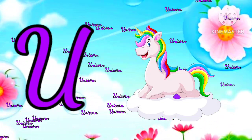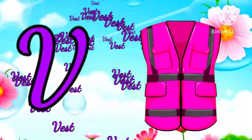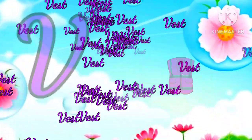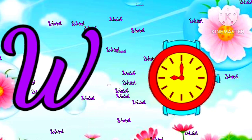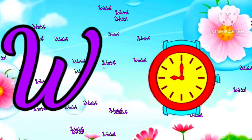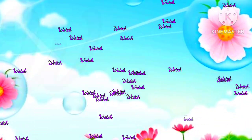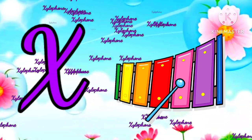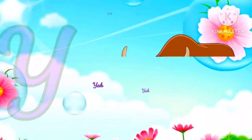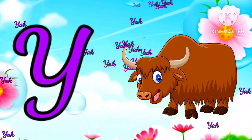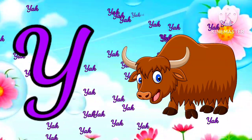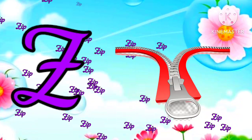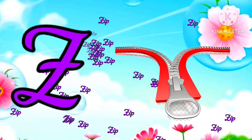V for vest, W for watch, X for xylophone, Y for yak, Z for zip.